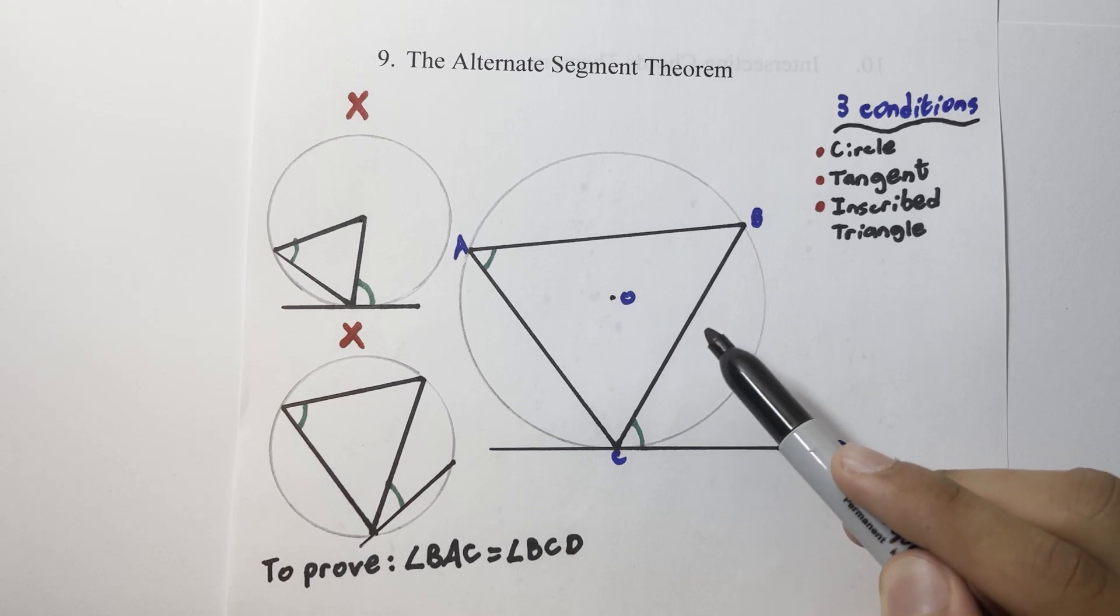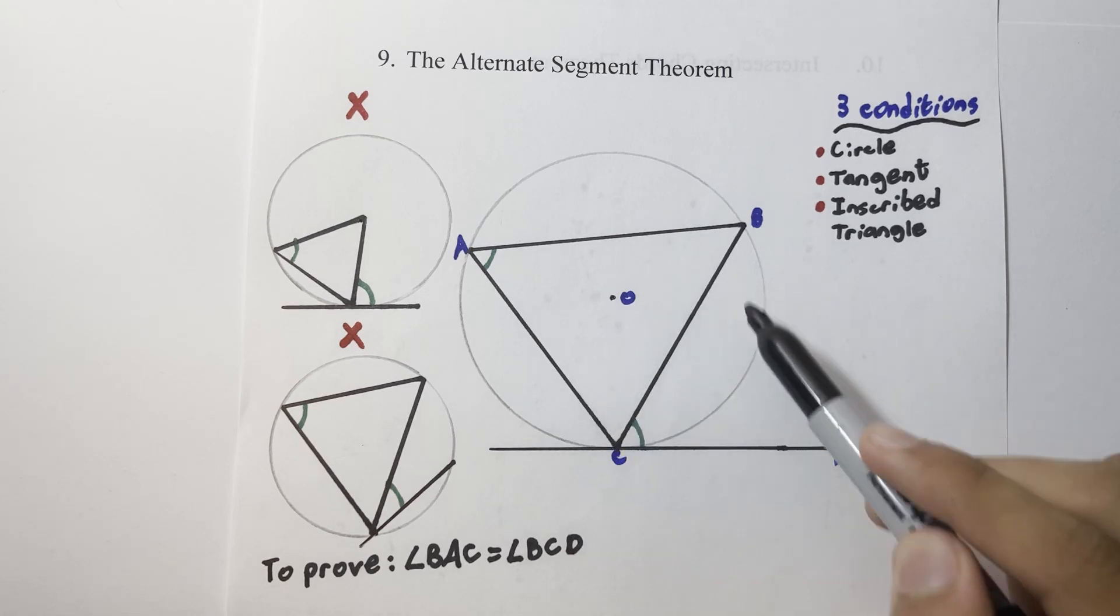This means that all of the vertices of that triangle have to be located on the circle circumference, much like a cyclic quadrilateral like we covered in the last video, but imagine that as a cyclic triangle instead.